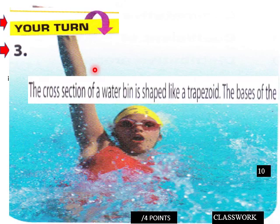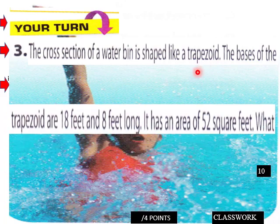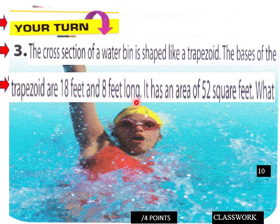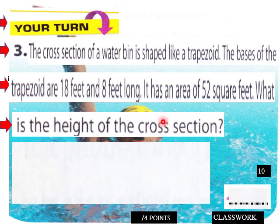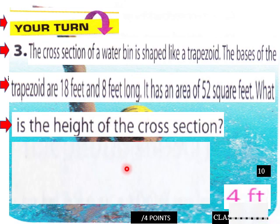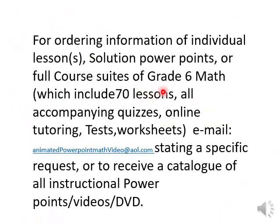Your turn: a cross-section of a water being is shaped like a trapezoid. The bases of the trapezoid are 18 feet and 8 feet long and it has an area of 52 square feet. What is the height of the cross-section? Using the formula for a trapezoid, your calculations should come up with 4 feet. That completes lesson 13.3 Part 1, grade 6 math. Visit aolo.com for questions, course materials, tutoring, tests, or worksheets.